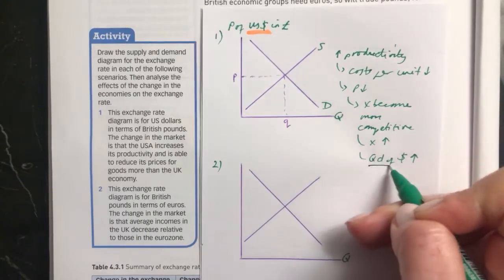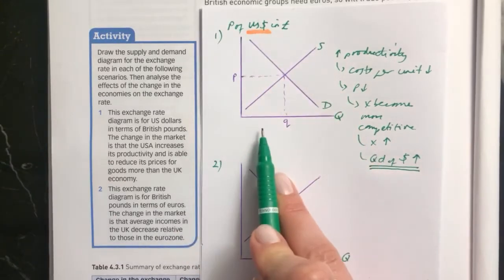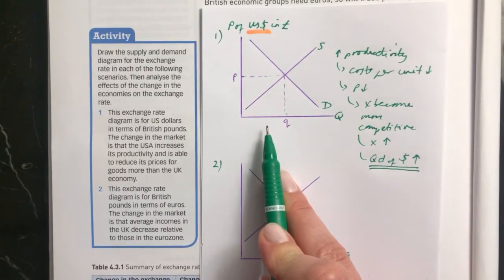And therefore, this is the key bit for our diagram. Because remember, this is about the dollar, the currency. This isn't showing anything to do with the actual goods themselves, it's just the currency.